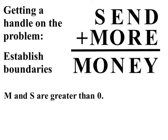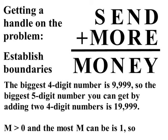Now let's try to narrow these numbers down a little bit further. Think about the biggest number M can be. The biggest four-digit number is 9,999. So the biggest five-digit number you can get by adding two four-digit numbers is 19,999.